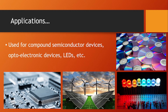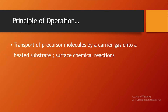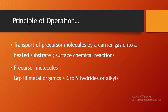The principle of MOCVD is the same as that of CVD — it is a specialization of CVD based on the precursors involved. Precursor molecules are transported into the reactor chamber by carrier gases onto a heated substrate, where chemical reactions take place, followed by nucleation and atomistic growth to produce a high quality thin film. The precursor molecules mainly involve group 3 metal organics and group 5 hydrides or alkyls, with carrier gases such as hydrogen or nitrogen.